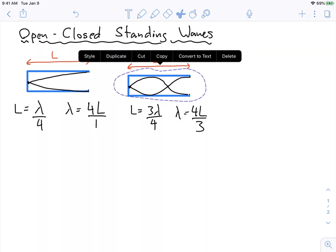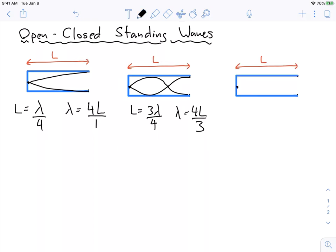Let's just do one more to see the pattern. What does the next one look like? Well, the next one looks like this. And the wavelength, this is one whole wavelength plus a quarter. So that is five quarters of a wavelength, or lambda is equal to four L over five.